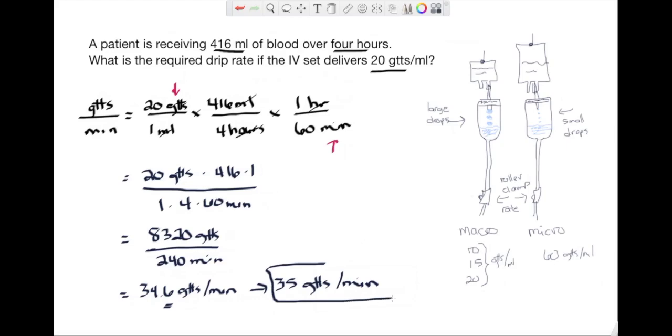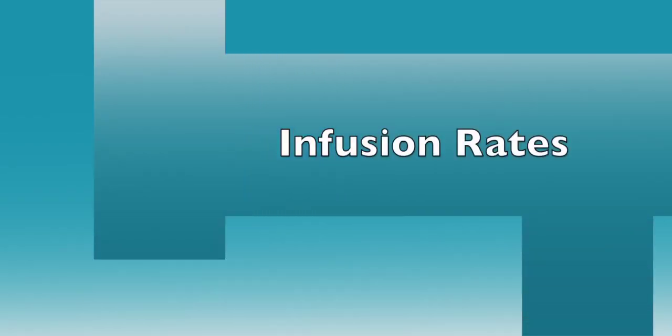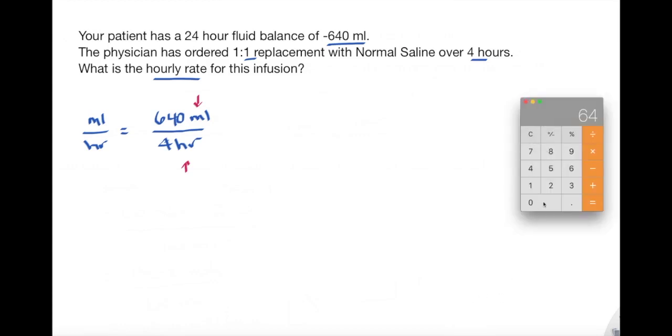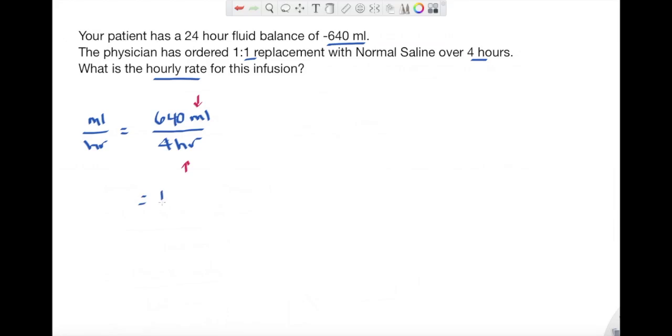Okay, we're now moving to the word problems for infusion-based questions. In this question, I'm looking for an hourly rate of an infusion: mLs per hour. I can see that over 24 hours I have a fluid balance of minus 640, and it's been ordered as a replacement of one-to-one with normal saline over four hours. So when I plug in my 640 over four hours, I can immediately solve this equation. 640 divided by 4 is equal to 160 mLs per hour.